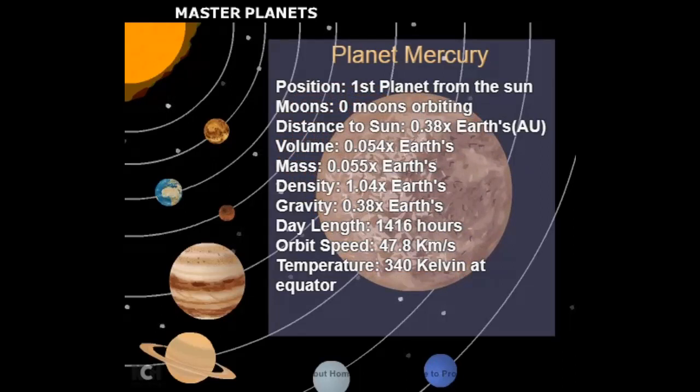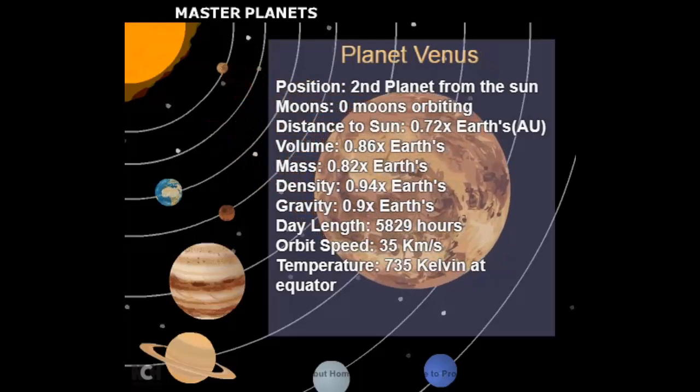Pluto was recently demoted to a dwarf planet, a new class of solar system objects that have an orbit around the Sun but share their space with other celestial bodies.